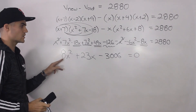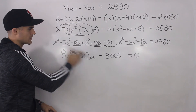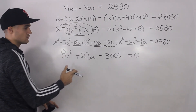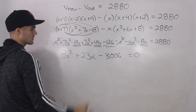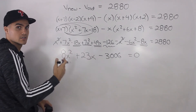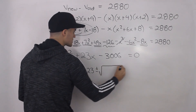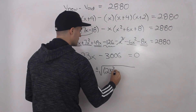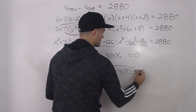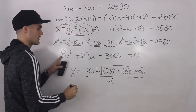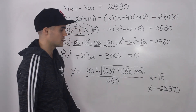We now have a quadratic equation. Factoring by decomposition would require multiplying 8 by negative 3,006 — a very large number — and finding two factors that add to 23, which would take forever. So instead, use the quadratic formula: x equals negative 23 plus or minus the square root of (23 squared minus 4 times 8 times negative 3,006), all over 2 times 8. This gives x equals 18 or x equals approximately negative 20.875.